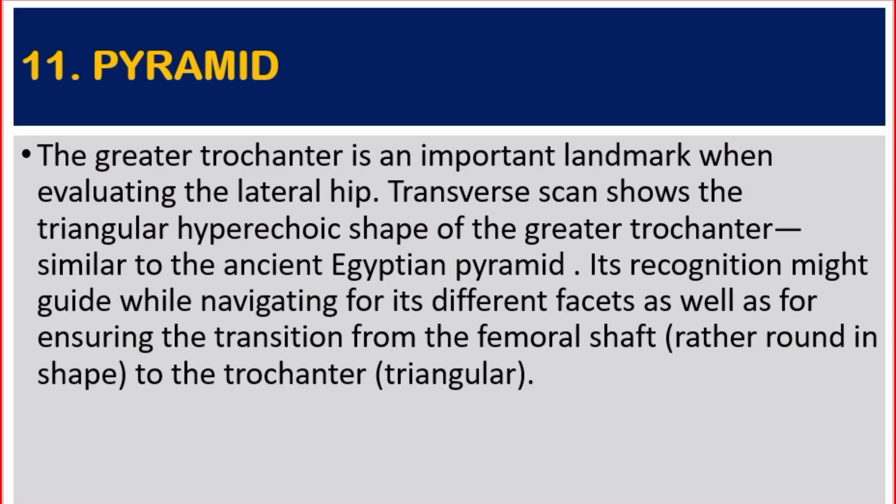Number eleven: pyramid. The greater trochanter is an important landmark when evaluating the lateral hip. Transverse scan shows the triangular hyperechoic shape of the greater trochanter, similar to an ancient Egyptian pyramid. Its recognition might guide navigation to its different facets, as well as ensuring the transition from the femoral shaft — rather round in shape — to the trochanter's triangular shape.